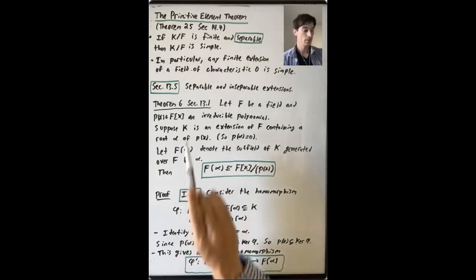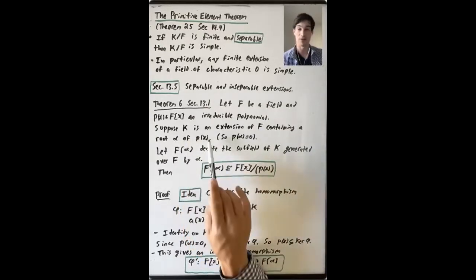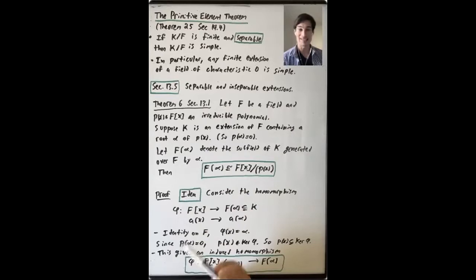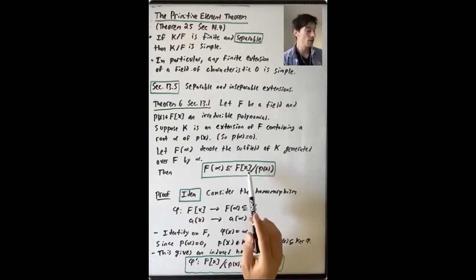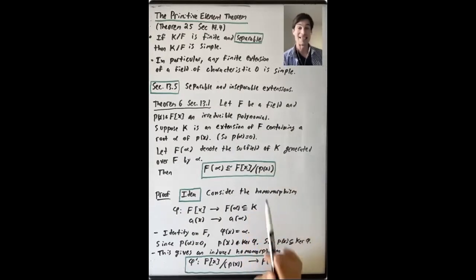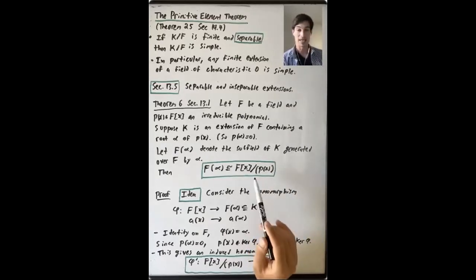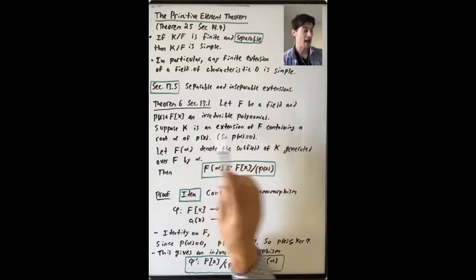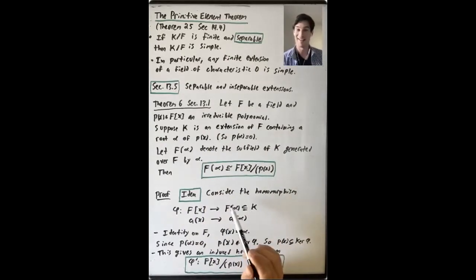In order for this theorem to have any content, you need this field K that is an extension of F containing root alpha of p(x). How do we know there's any extension of F that contains a root of p(x)? The whole main thing we've done so far is show that F[x] mod the ideal generated by p(x) is an extension of F in which p(x) has a root. So Theorem 6 relies on the fact that we have one extension in which we have this root of p(x). They're related in a natural way.